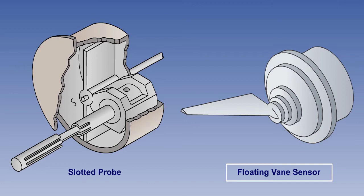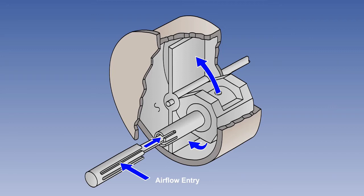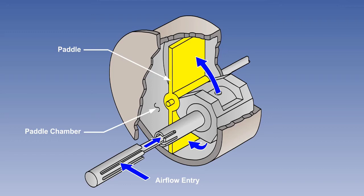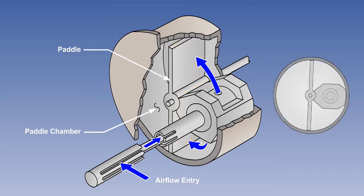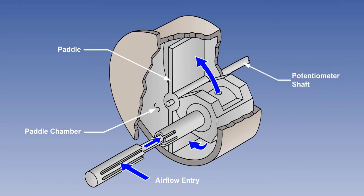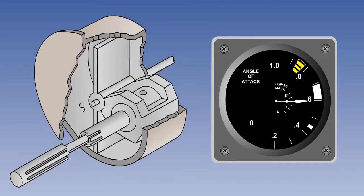Let's look at the slotted probe first. The slotted probe sensor consists of a probe with two slots in the surface facing the oncoming airflow, and works on the principle that as the angle of attack varies, the amount of air pressure in the slots will vary also. Air pressure in the probe is transmitted through separate air passages to opposite sides of a paddle in a paddle chamber. Variations in air pressure caused by changes in airstream direction cause an imbalance of the air pressures acting on the paddle, and the paddle will rotate on a shaft until the pressures are equalized. The rotary movement of the shaft drives a potentiometer or synchro, and the output is used to position a pointer on an angle of attack indicator.